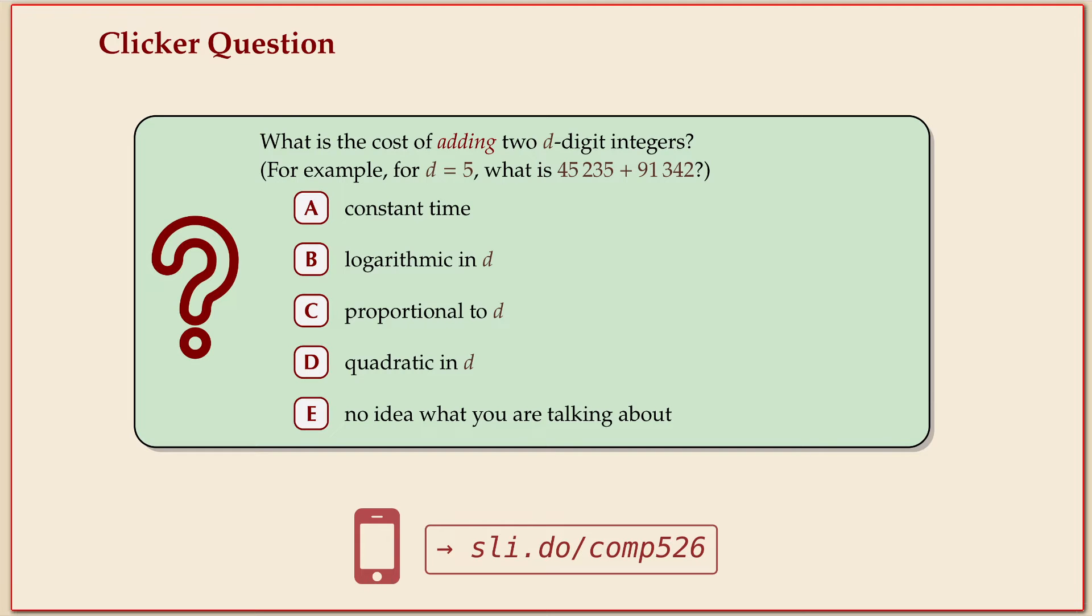There's a lot of correct answers, and the problem is it depends on your model. It's a bit of a religious question what you believe about your computers. You can argue it's constant time because your computer has 64-bit integers and can add those up in one or two cycles. That's constant time, isn't it?